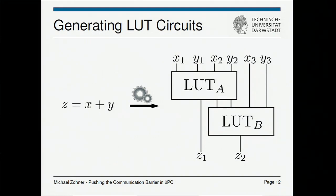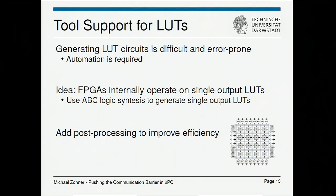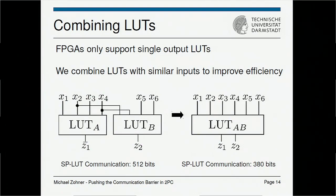For generating lookup table-based protocols, we start from a high-level description and compile it into a circuit of lookup tables. We observed that FPGA synthesis tools do exactly this job, with some small specifics. They compile from a high-level description down to lookup tables, but are restricted to up to 6-input, 1-output lookup tables. One post-processing step we do is combining multiple lookup tables: if we see overlapping inputs across multiple tables, we merge them together, including output wires, thereby reducing the communication needed to evaluate the functionality.